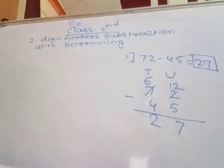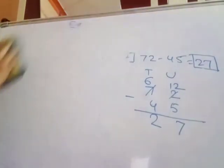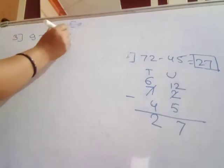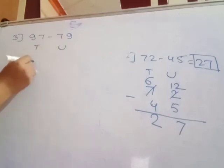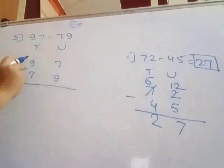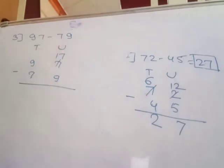Third example: 97 minus 79. Write with tens place and unit place aligned vertically: 9 and 7 on top, 7 and 9 below. The unit digit 7 is less than 9, so borrow 1, making it 17. Now compute 17 minus 9.